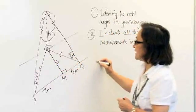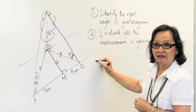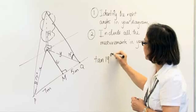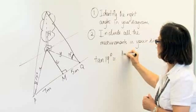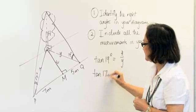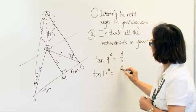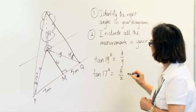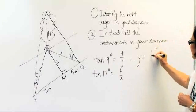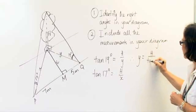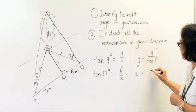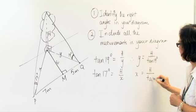From the diagram, we can see using the right-angled triangle that tan 19 degrees is equal to H over Y. Therefore, Y must equal H over tan 19 degrees and X must equal H divided by tan 17 degrees.